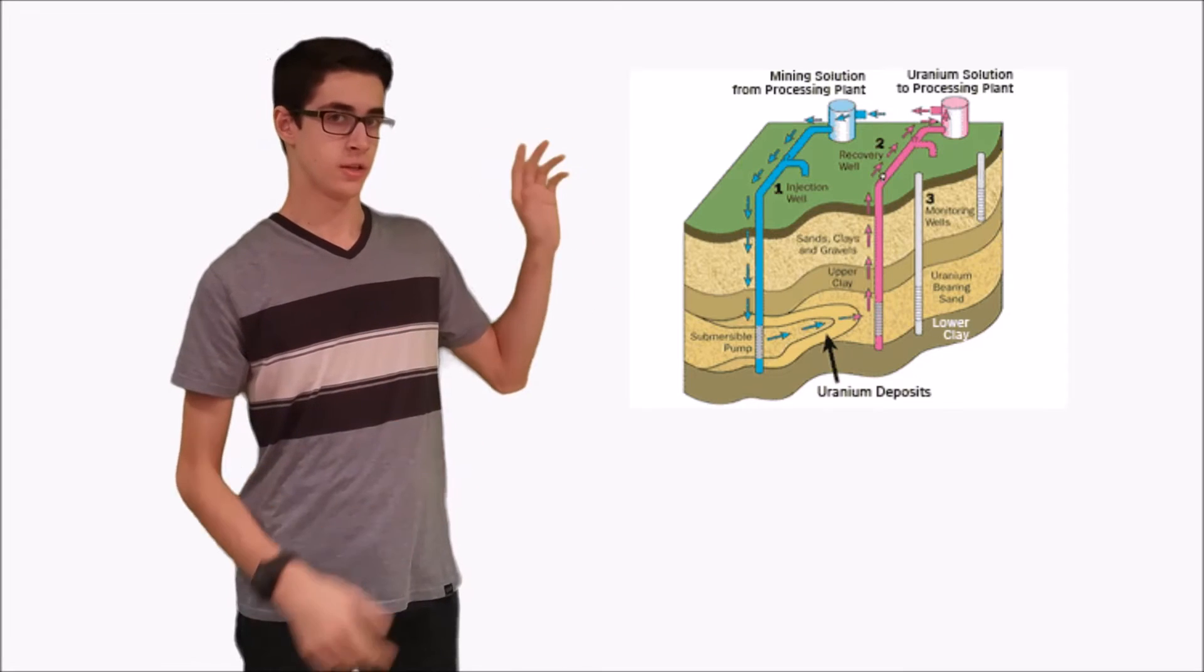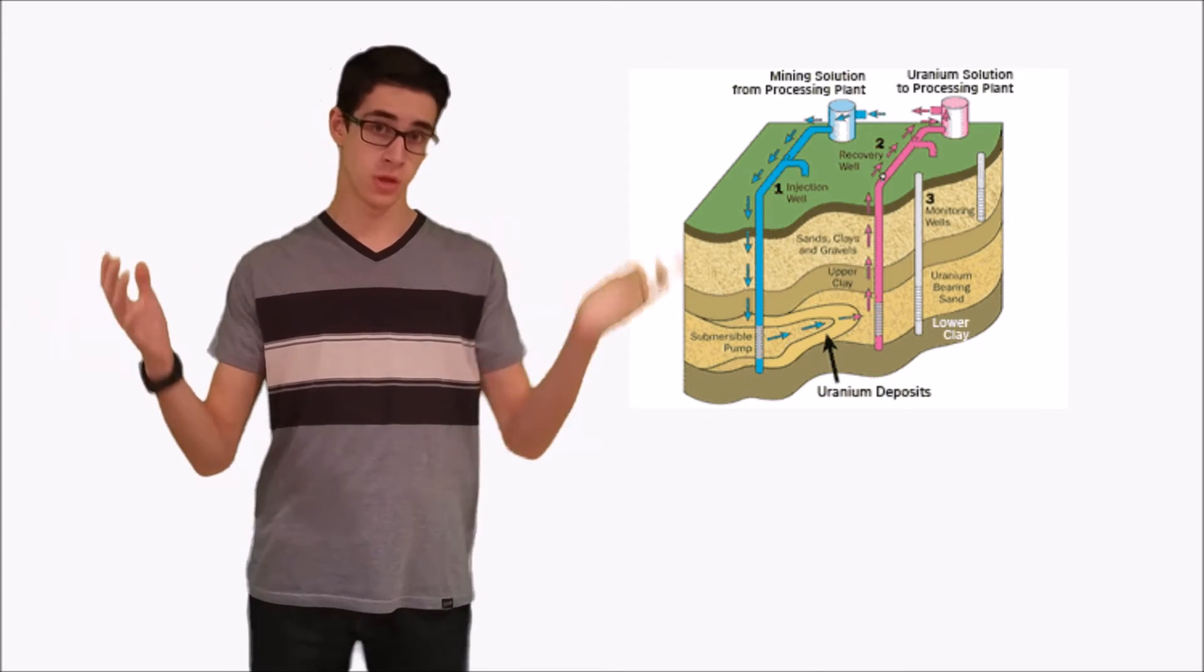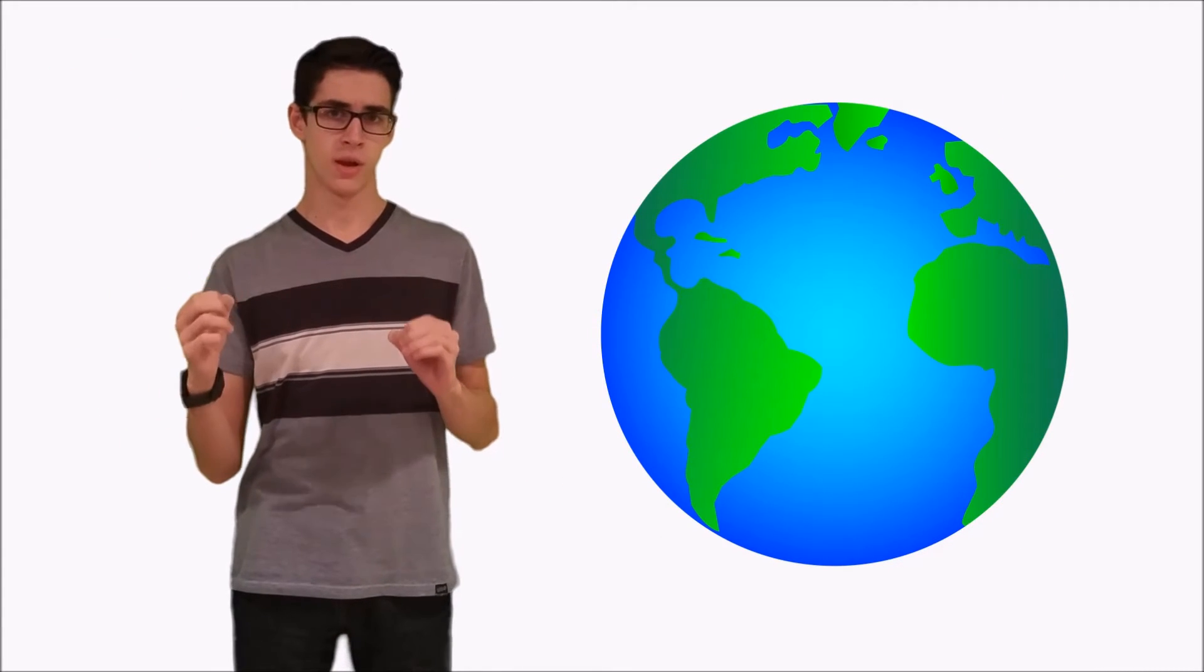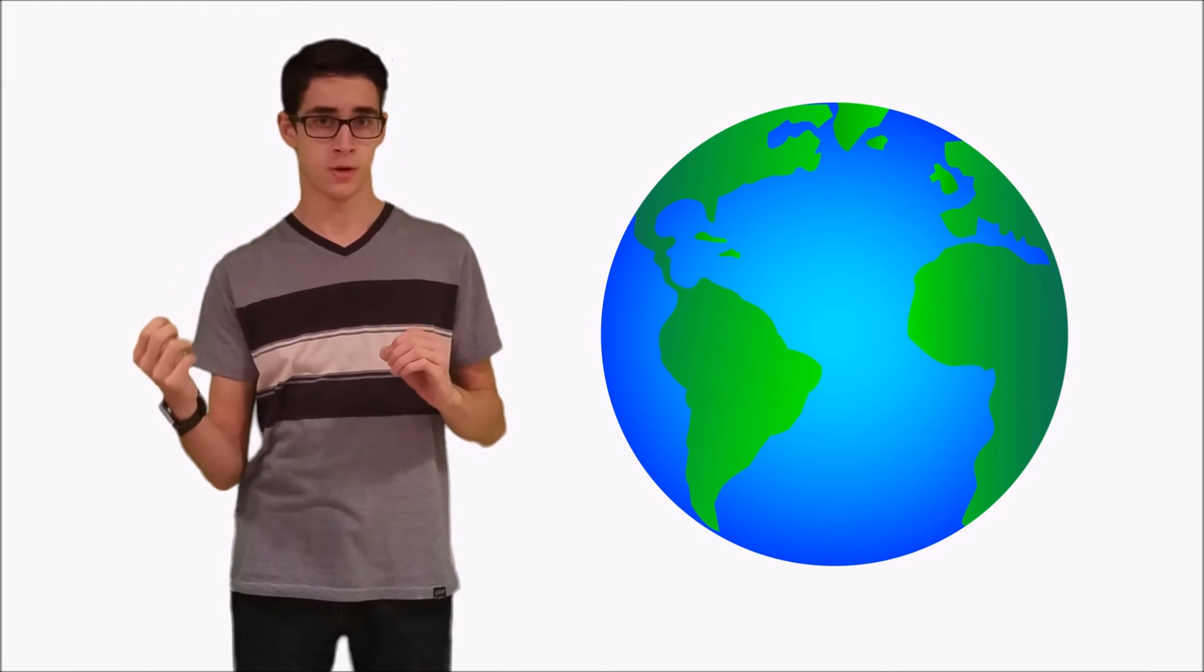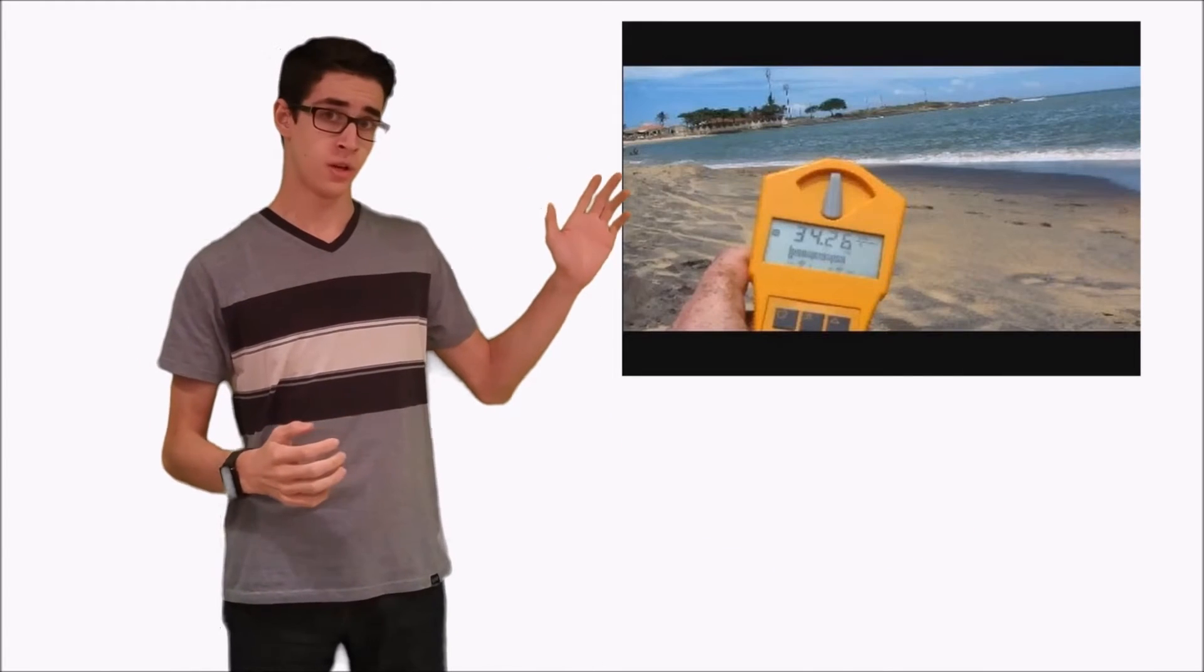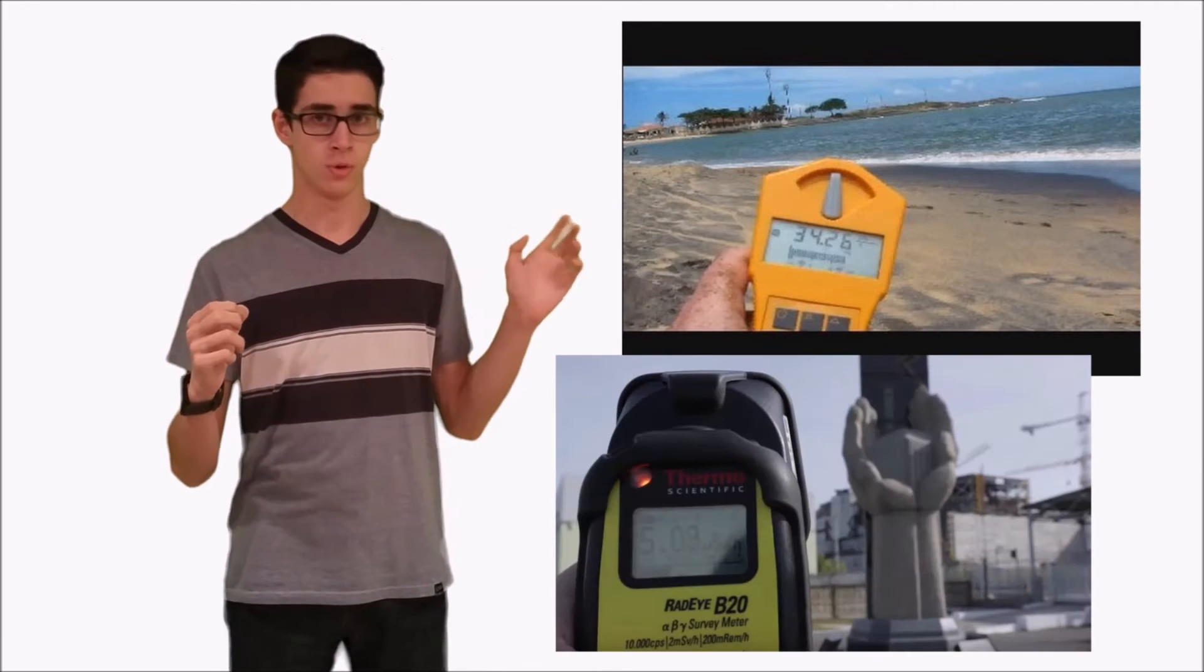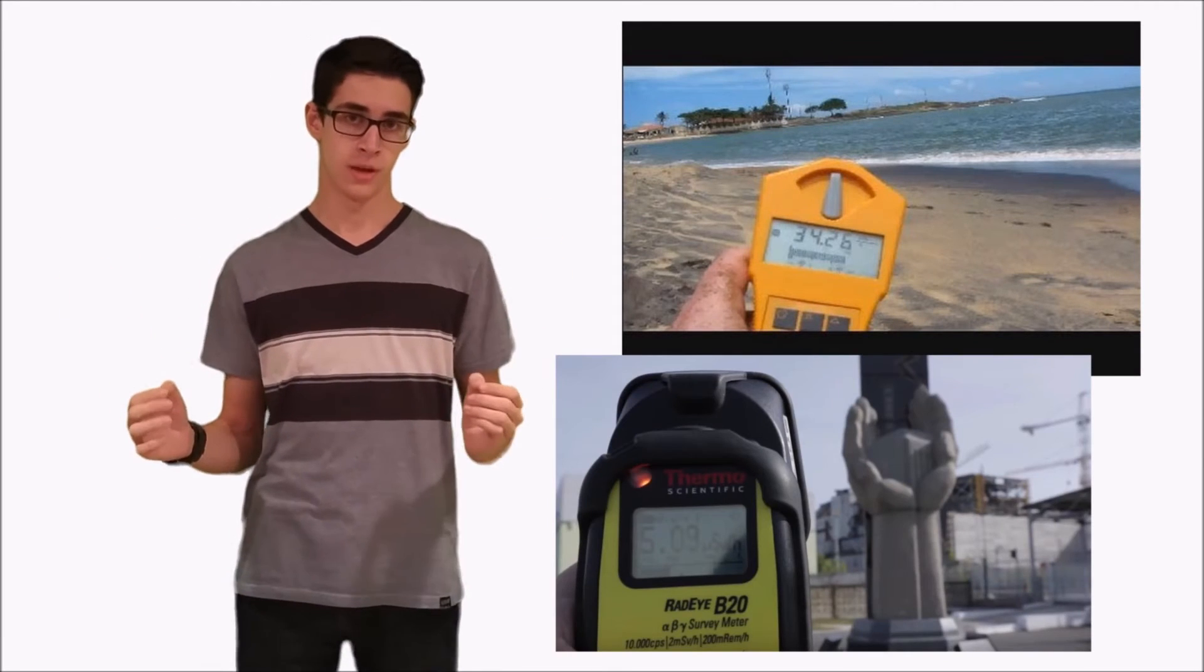But today, those mines are quickly being shut down and replaced with much safer alternatives, such as in-situ leach mines, which are safer for both the workers and for the environment. Another thing to note is that there's radiation everywhere and in everything. It really only becomes dangerous in extreme quantities. There are even places on Earth that are naturally more radioactive than Chernobyl or Fukushima are today. Take Guarapari, Brazil, for example, which is seven times more radioactive than Chernobyl, and that's still not even close to a fatal amount.